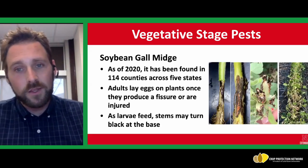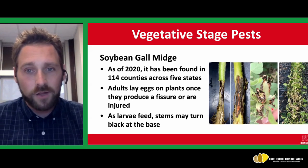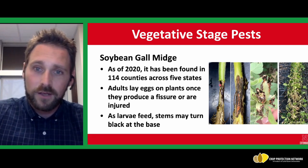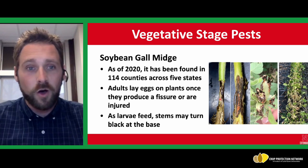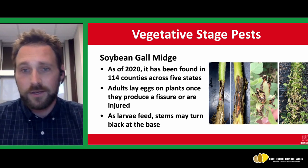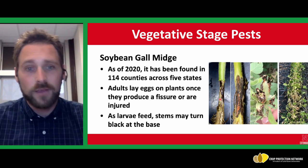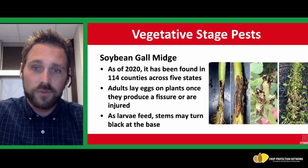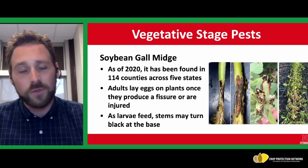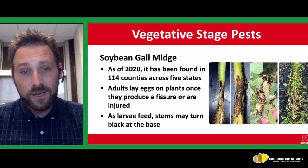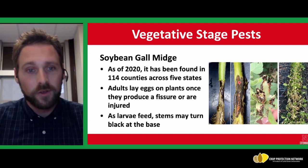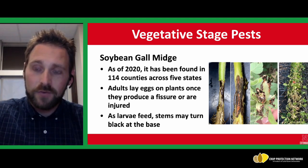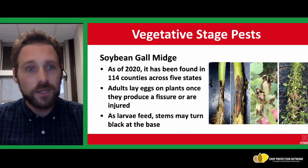Once the larvae start to feed within the plant, depending on the area or region you're in, you may see dark discolorations at the base of the plant below the cotyledonary node. In some cases, you may see an actual gall form, which matches the common name of the insect. The larvae change in color from white in appearance to more orange, taking about 12 days to transition. As they feed, they will girdle the plants, cutting off the ability to move water or nutrients, causing the plants to wilt and die. Under really heavy infestations, you may see this happen within 21 days of first adult activity.